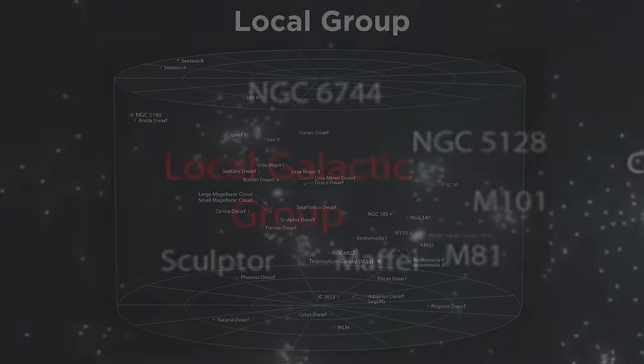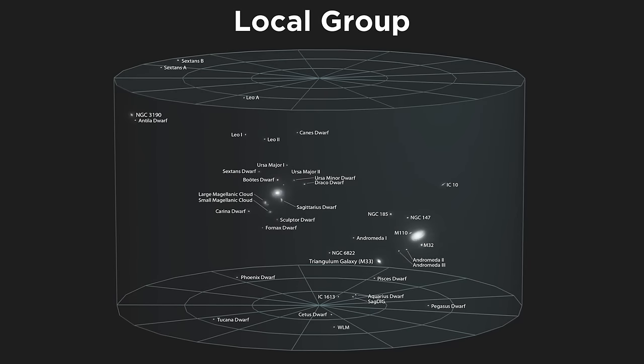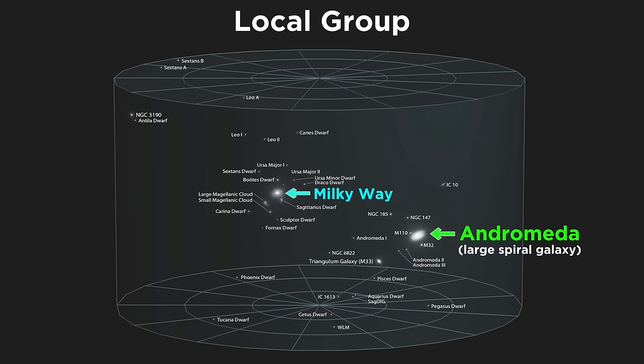Now let's zoom in on the local group. This contains more than fifty galaxies, many of which are tiny dwarf galaxies, but some of which are fairly large by galactic standards. The largest of these is called the Andromeda galaxy, which is a spiral galaxy. Around half that size, the next biggest is called the Milky Way galaxy, also a spiral galaxy, and that's our home.